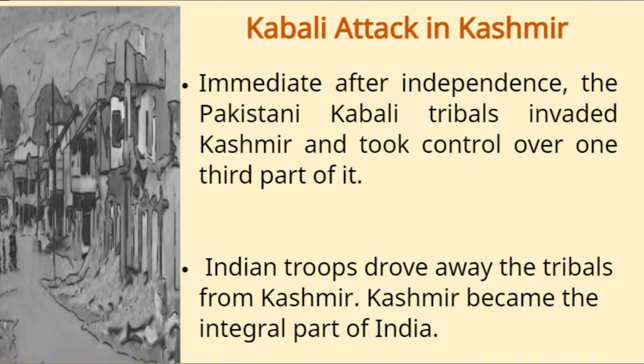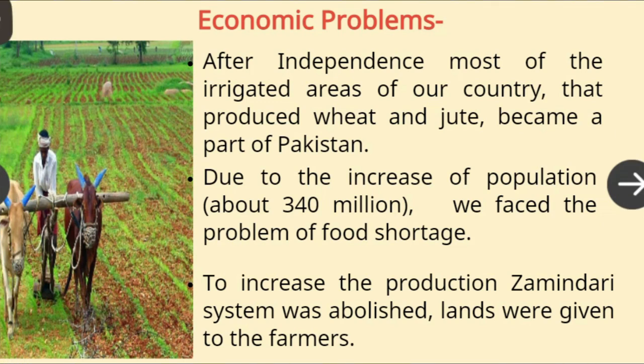After this, a new problem arose: the economic problem. After independence, most of the irrigated areas of our country that produced wheat and jute became a part of Pakistan. Due to the increase of population to about 340 million, we faced the problem of food shortage. To increase production, the Zamindari system was abolished and lands were given to the farmers.